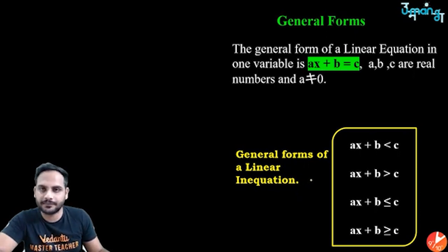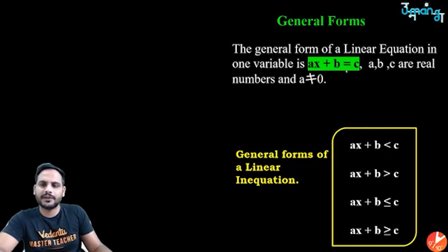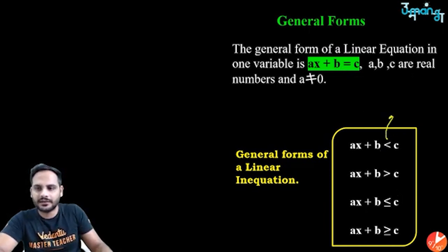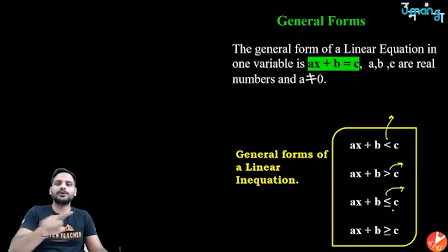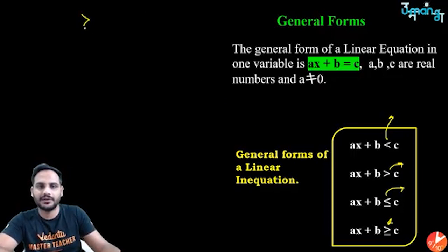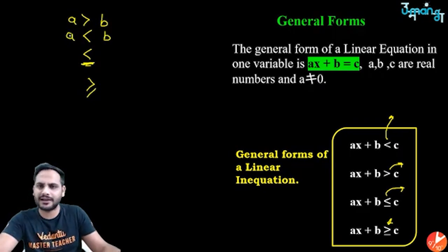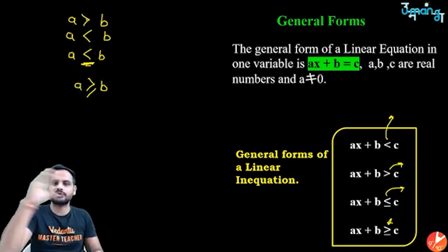There are 4 signs in linear inequations. The general form was ax + b = c. Now replacing the equals sign, we have: ax + b < c, ax + b > c, ax + b ≤ c, and ax + b ≥ c. So a > b means a is greater, a < b means b is greater. Wherever the sign opens its mouth, that side is bigger.